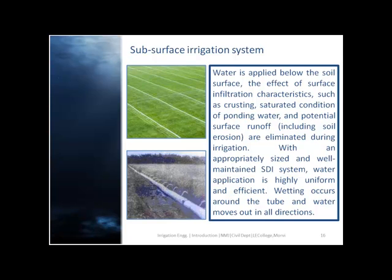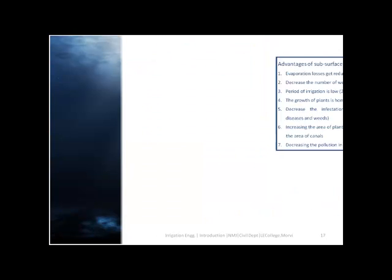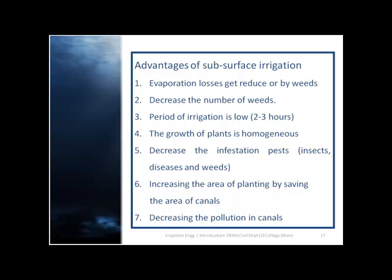Wetting occurs around the tube and water moves out in all directions. Advantages of subsurface irrigation include: evaporation losses are reduced, weeds are decreased, the period of irrigation is low — approximately 2 to 3 hours — plant growth is homogeneous, infestation is decreased, the area of planting is increased by saving the area of canals, and pollution in canals is decreased.